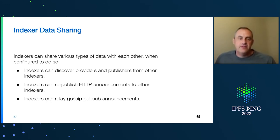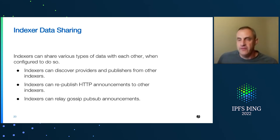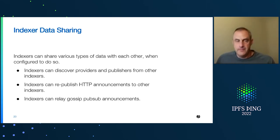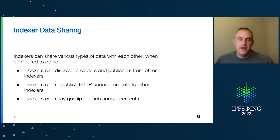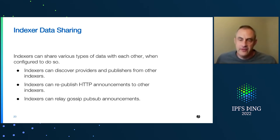Indexers are able to share data with each other — they can share discovered providers and publishers, or discover providers and publishers from other indexers. You can configure any indexer to retrieve the providers from another indexer, so it can learn about them and exchange indexing information. Indexers can also republish HTTP announcements to each other, so if you send an announcement directly to a single indexer via HTTP, that indexer can be configured to republish over gossip pub sub to any other indexers. Mainnet nodes can also act as gossip pub sub relays.